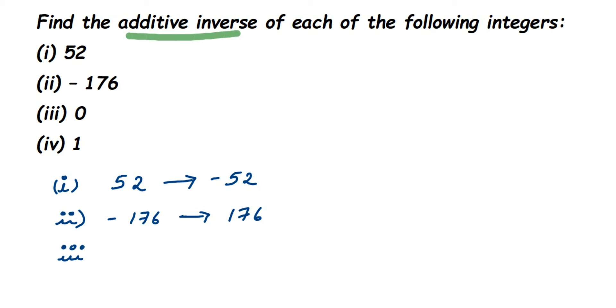So additive inverse of zero is nothing but zero itself because zero is a neutral number, it doesn't have any sign. So if you add zero to zero you will get zero, so additive inverse of zero is nothing but zero itself.